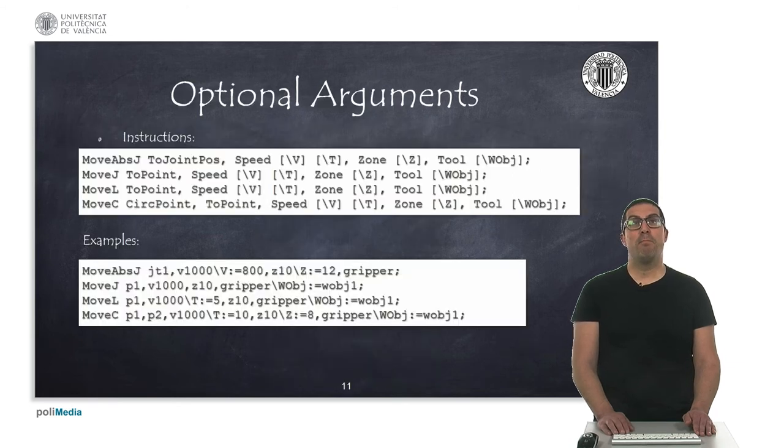Move instructions have a number of optional arguments. Here I show the syntax of move instructions that we have previously seen, specifically the arguments I have considered most relevant. For instance, TCP speed can be adjusted with the v speed argument, or the time of movement in seconds with the t argument. The zone data can be refined with the z parameter.